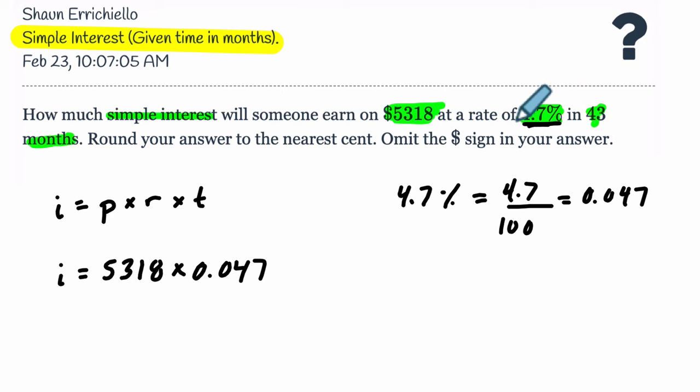So if it was halfway through the year, you would have essentially half of 4.7% applied to your principal. If it was two years, it would be double that amount. You just take the fraction of years that you're dealing with. So our fraction of years is 43 months out of 12 months in a year. That's our fraction.